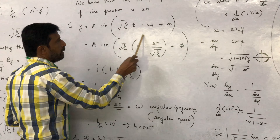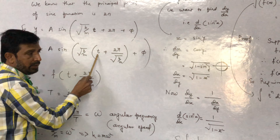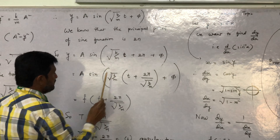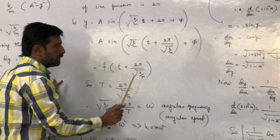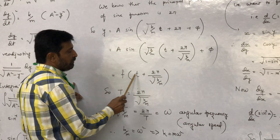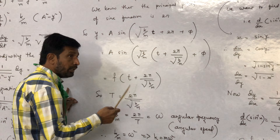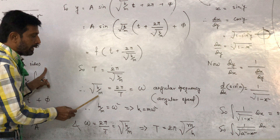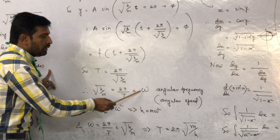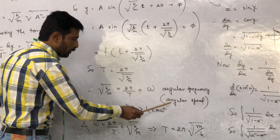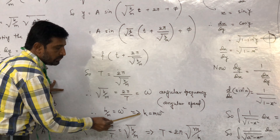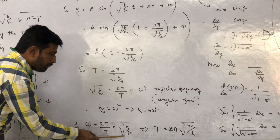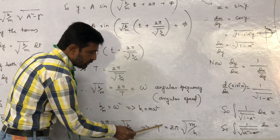Taking √(k/m) common: y = a·sin(√(k/m)·(t + 2π/√(k/m)) + φ). This must equal f(t + 2π/√(k/m)), meaning the periodic time T = 2π/√(k/m). So √(k/m) = 2π/T, which gives T = 2π·√(m/k). We can also define ω = √(k/m) = 2π/T, so T = 2π·√(m/k).